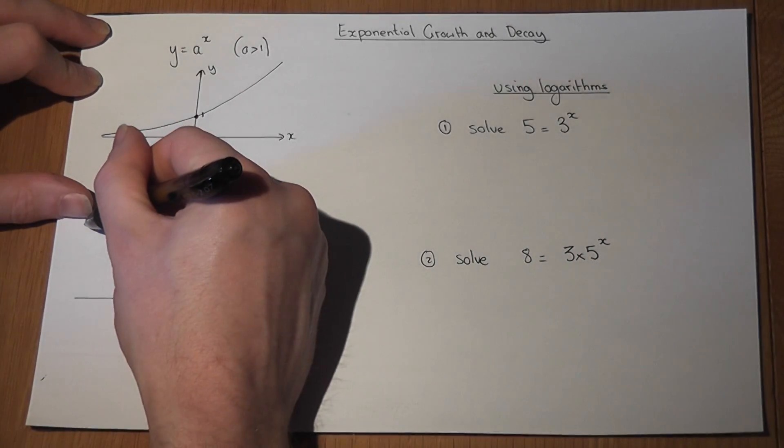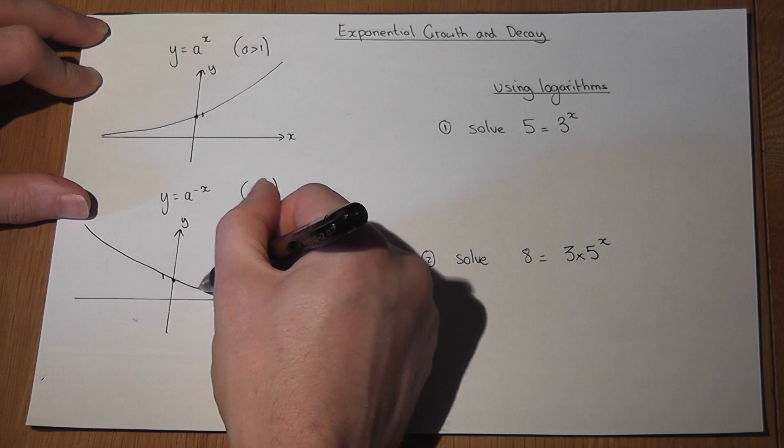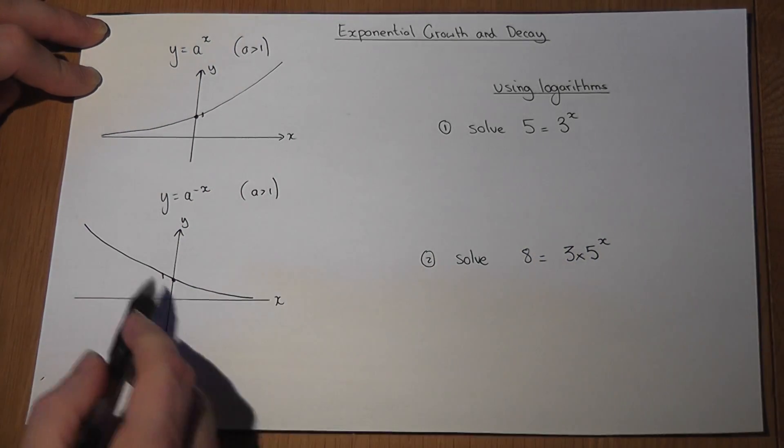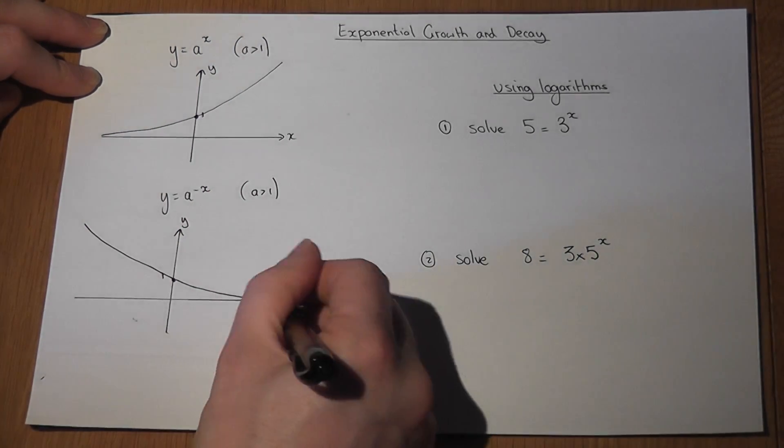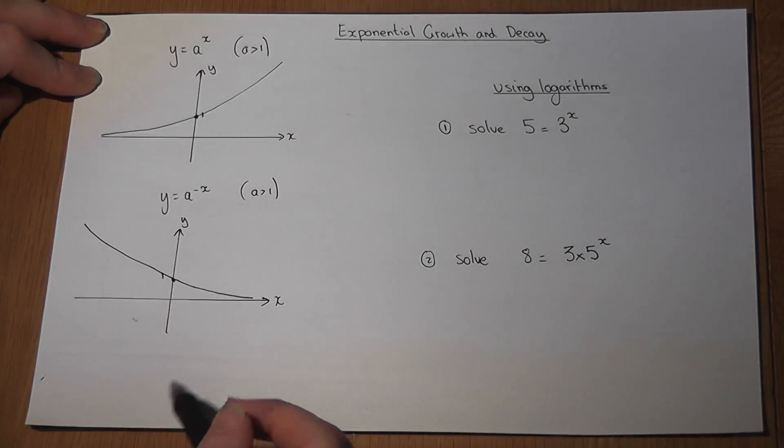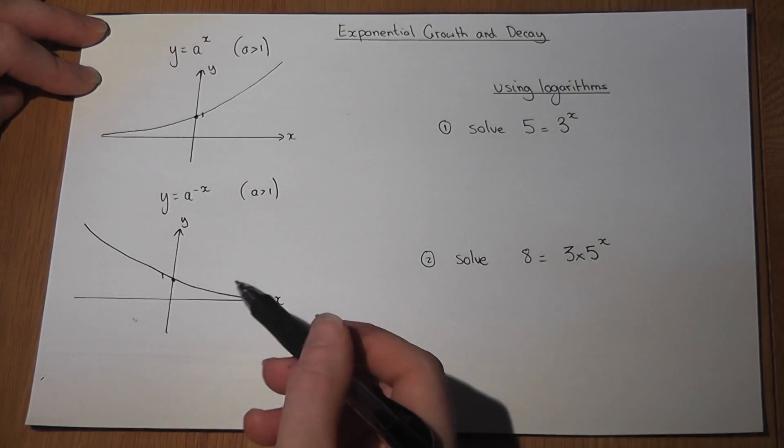So the graph actually decreases down towards the x-axis like so, and again asymptotes towards that x-axis. So we have a sketch of growth and a sketch of decay.